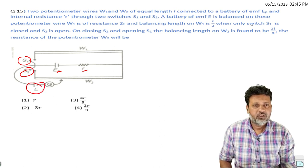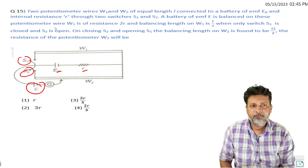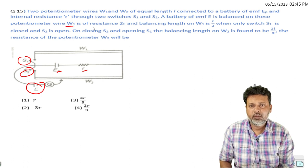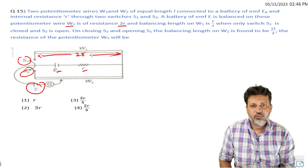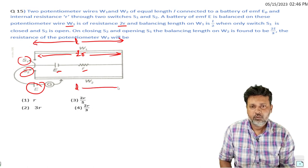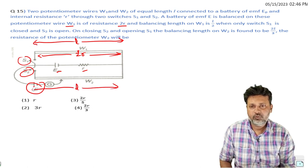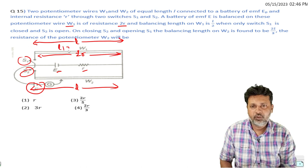The battery of emf is balanced on potentiometer wire W1 which is of resistance 2r. The balance point is at length l/2. The total actual length is l.